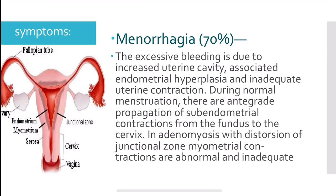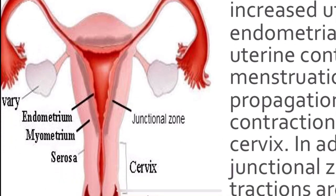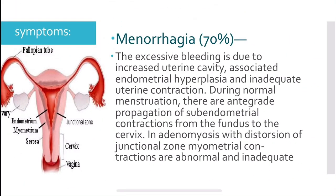Menorrhagia is found in 70% of patients with adenomyosis. Menorrhagia is abnormal uterine bleeding with excess bleeding greater than 80 ml or prolonged beyond seven days. The excessive bleeding is due to three factors: increased uterine cavity — because endometrial tissue deposited in the myometrium enlarges and makes the uterus bulky — associated endometrial hyperplasia, and inadequate uterine contraction.